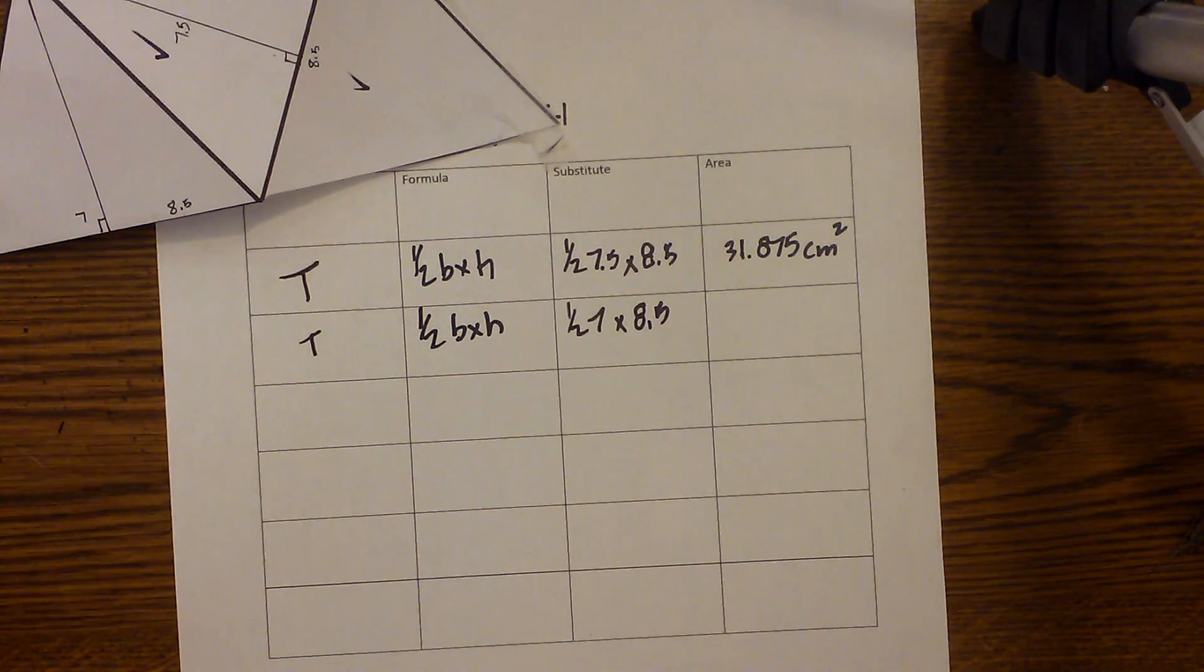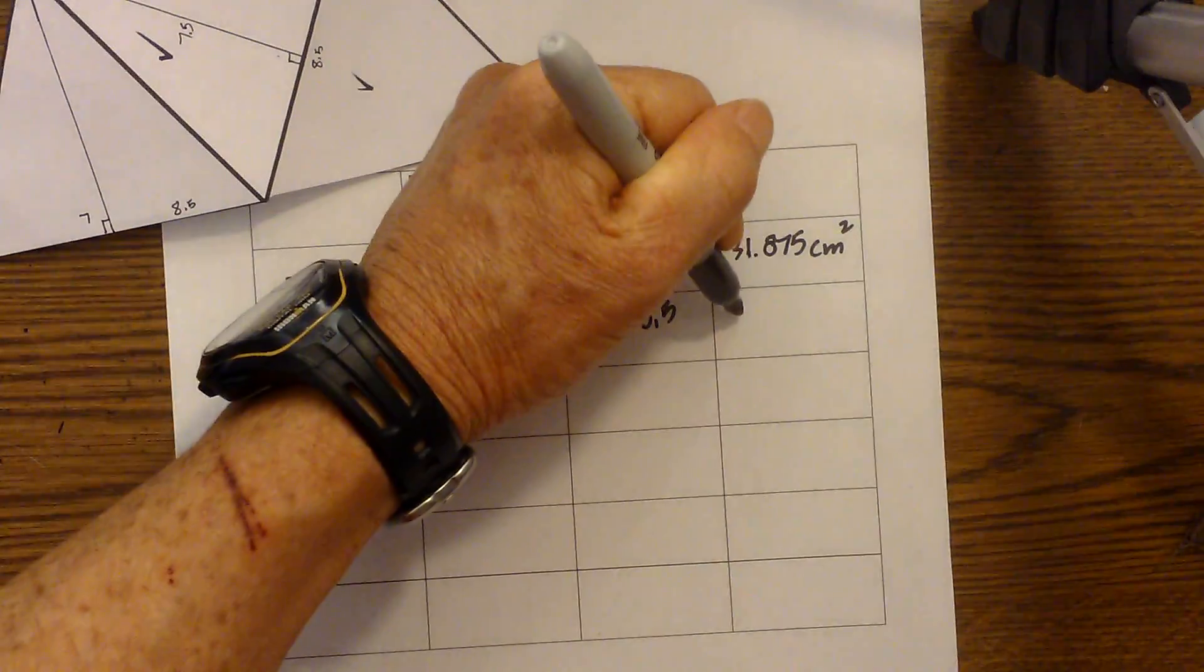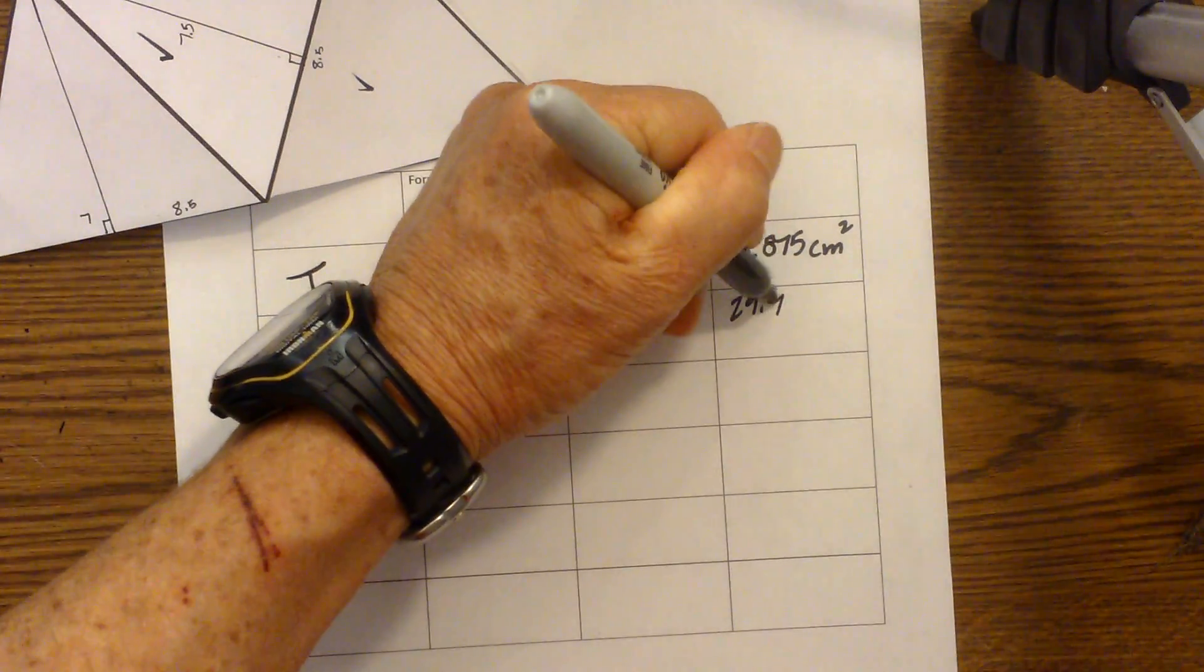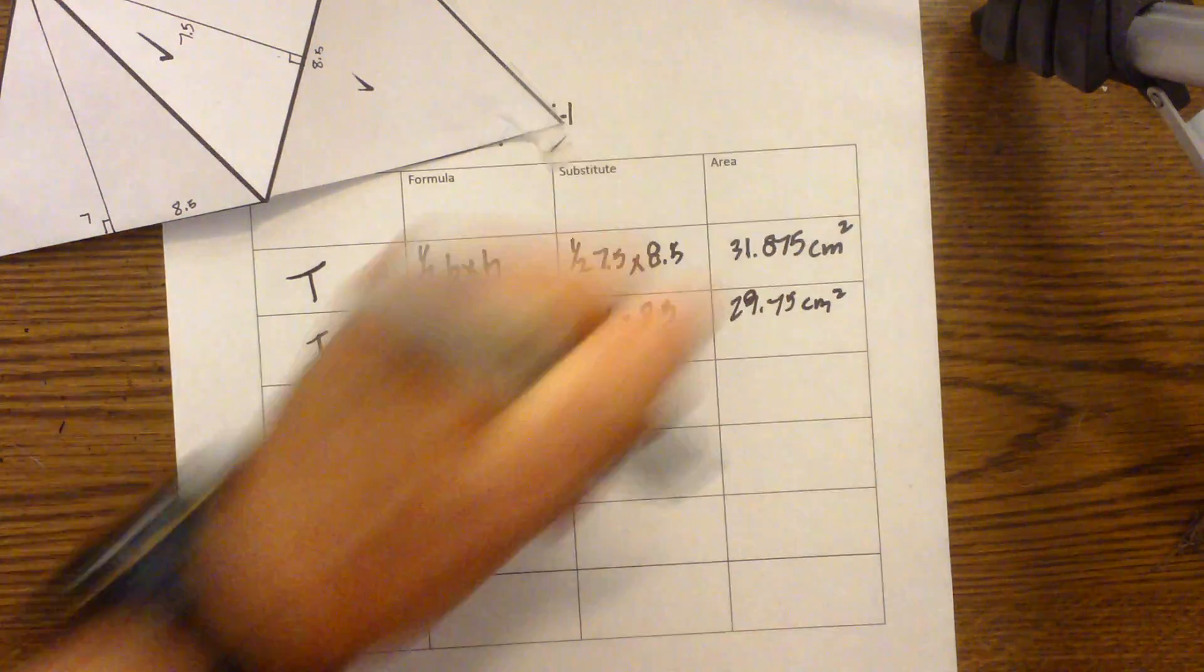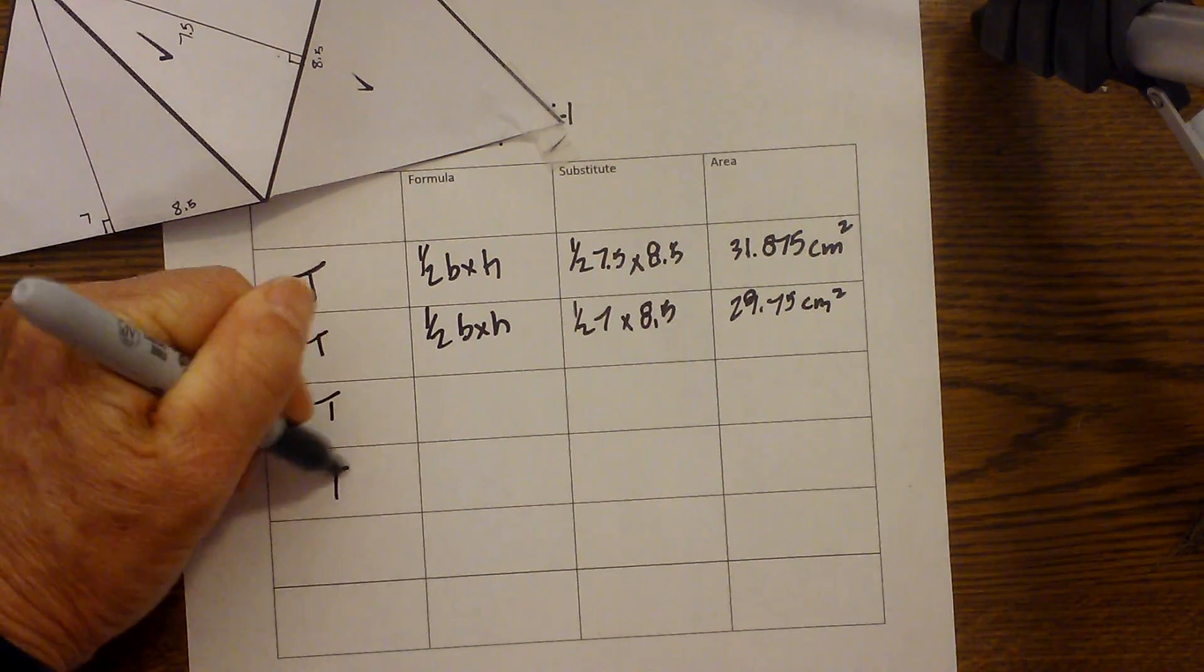So now I go 7 times 8.5, which equals 59.5, times one half equals 29.75 centimeters squared. So now I have two. Now I need two more triangles, and they're going to be the same as this.